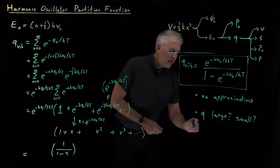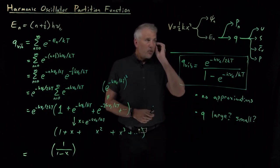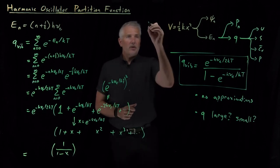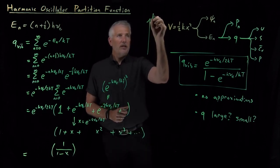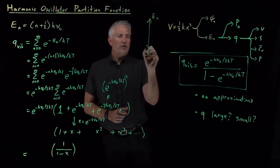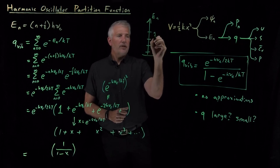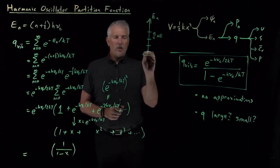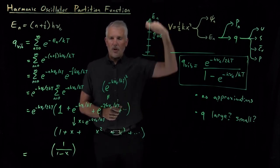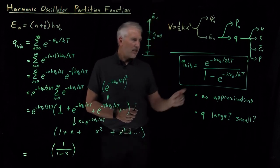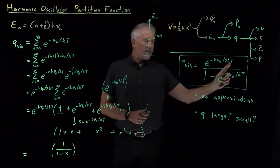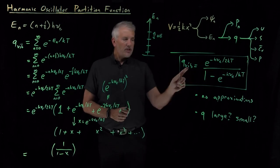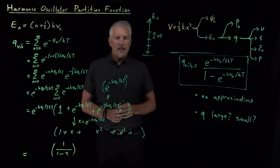And the reason that would be true is if the gap between the, let's see, let's draw a real quick energy ladder. 1/2 hν, 3/2 hν, 5/2 hν. If the difference in energies between these states is large or small compared to kT, that will tell us whether we're occupying just the bottom few states or lots and lots of excited states. And again, that energy difference compared to kT is going to be what determines the size of this partition function. So that's our next task is to figure out which of those two cases is true.